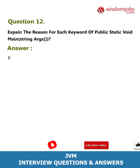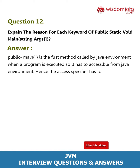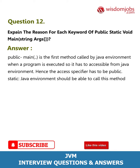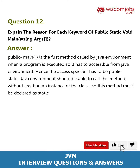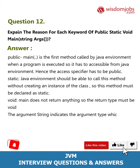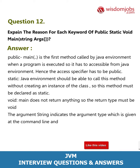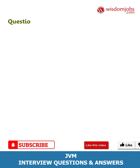Question 12: Explain the reason for each keyword of 'public static void main String args'. Answer: Public — main is the first method called by the Java environment when a program is executed, so it must be accessible, hence the access specifier is public. Static — the Java environment should be able to call this method without creating an instance of the class. Void — main does not return anything. String args — indicates the argument type given at the command line; args is an array of Strings given during command line execution.